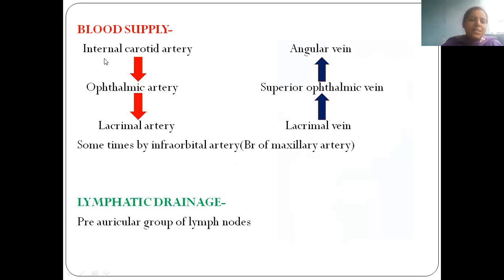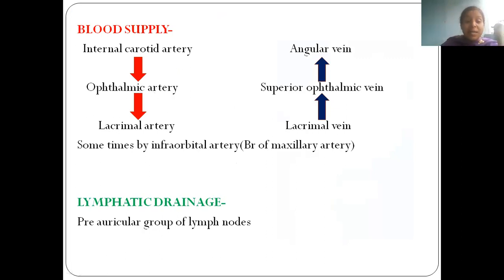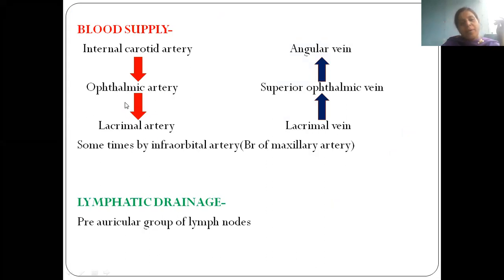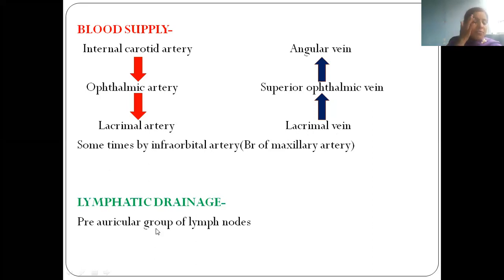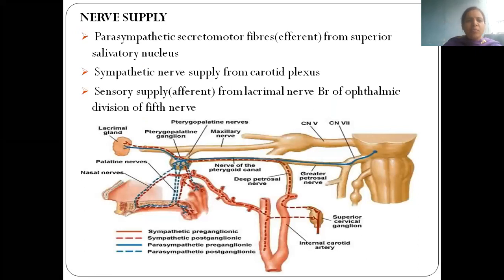Blood supply of the lacrimal apparatus comes from the internal carotid artery via the ophthalmic artery — specifically the lacrimal artery, a branch of the ophthalmic artery. Venous drainage is through the lacrimal vein, which drains into the superior ophthalmic vein and then into the angular vein. Lymphatic drainage goes to the pre-auricular group of lymph nodes.